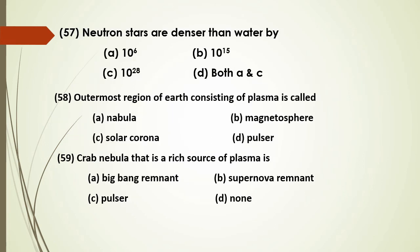Neutron stars are extremely dense self-gravitating objects. The density of a neutron star is about 10^15 times that of ordinary matter.